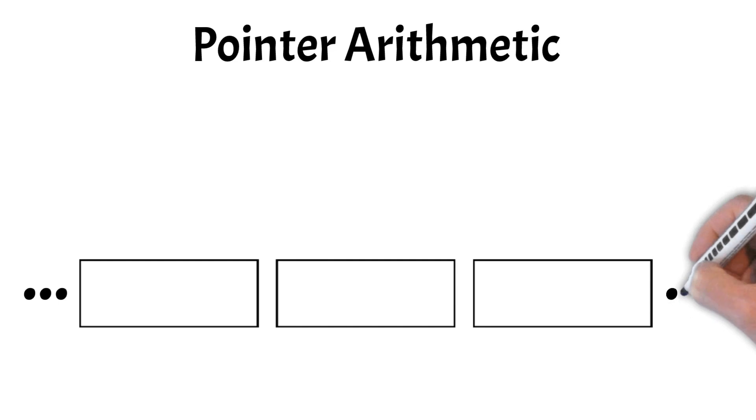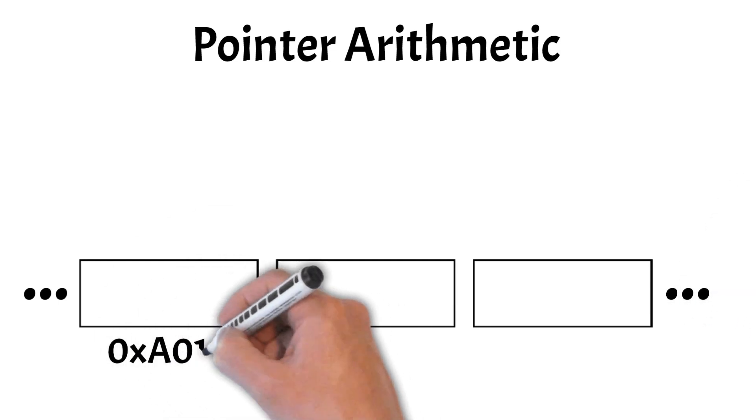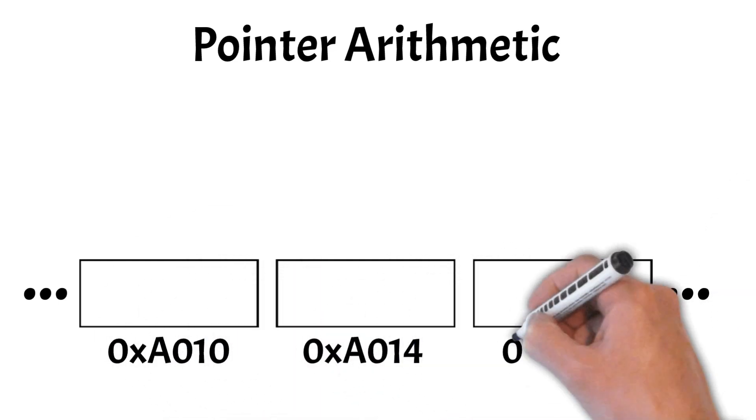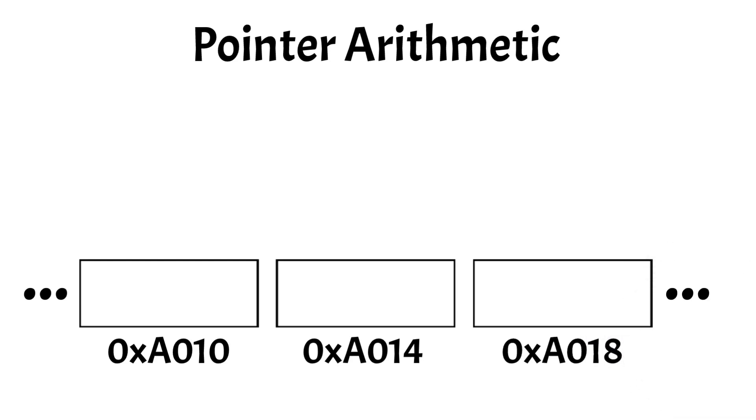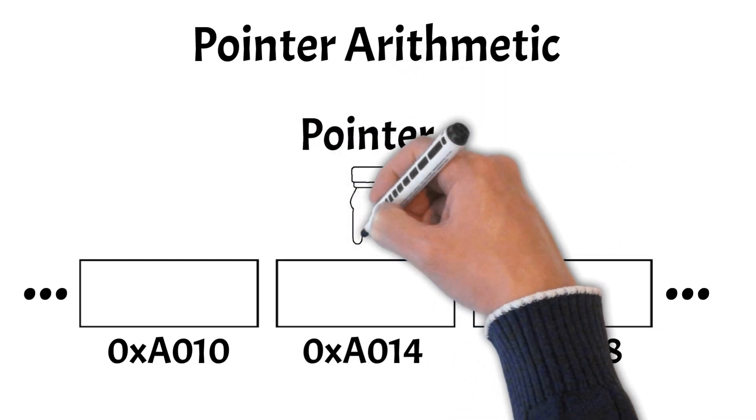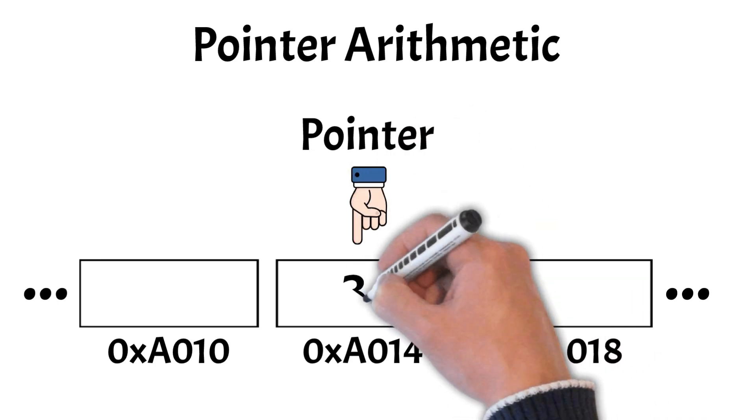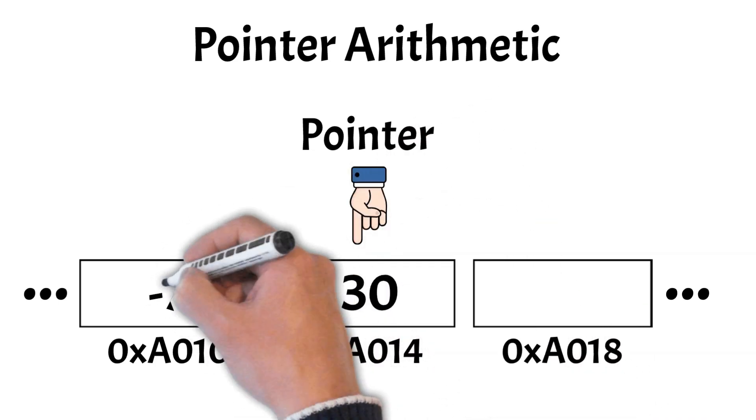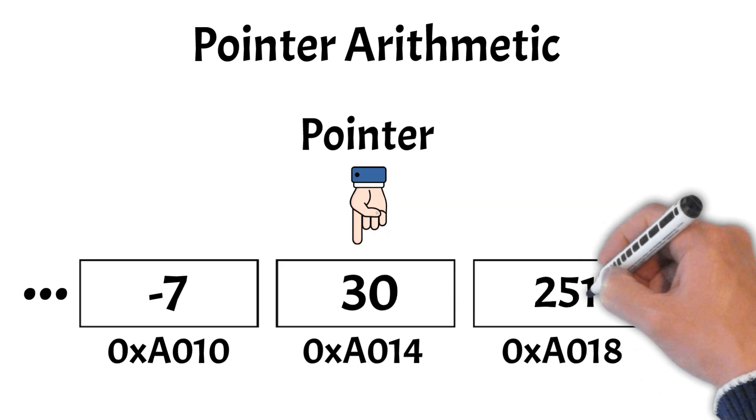we don't change the value stored at the memory location the pointer points to. Instead, we move the pointer forward or backward in memory. For example, consider a pointer that points to a memory location where the value 30 is stored.